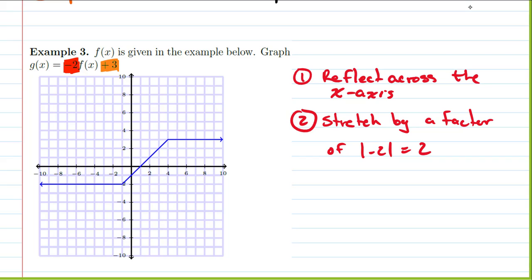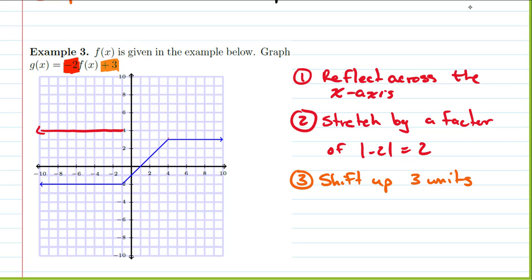The plus 3 is just going to shift the graph up. So we start with our basic graph. We have this line segment at negative 2 — we need to reflect it over the x-axis and then stretch it by a factor of 2, so that's going to put it at positive 4. Then we take the other part and do the same thing: we flip it over to negative 3 from positive 3, and then stretch it by a factor of 2, which takes it down to 6. And we connect our pieces — that's our first part.